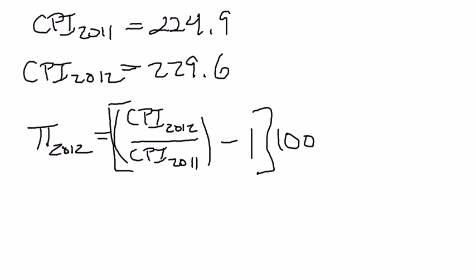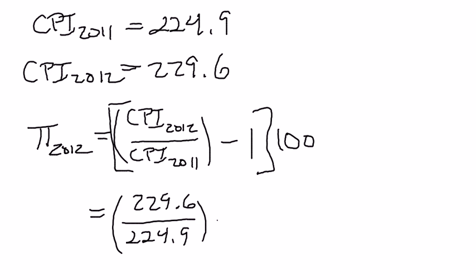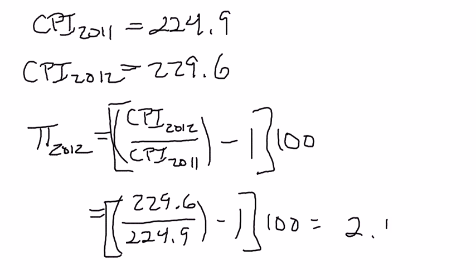This is just one equation with three unknowns. If you plug in any two of the unknowns, you should be able to solve for the third. Here, I'm asking you to do the relatively simple thing of plugging in the values of the CPI and calculating the inflation rate. In 2012, the Consumer Price Index is 229.6; in 2011, the Consumer Price Index is 224.9. Subtract 1 and multiply by 100, and you will get an inflation rate of 2.1%.